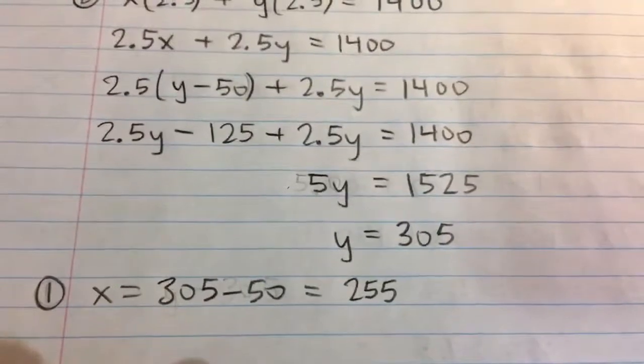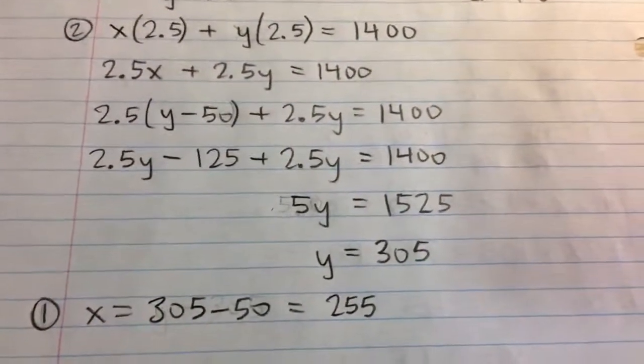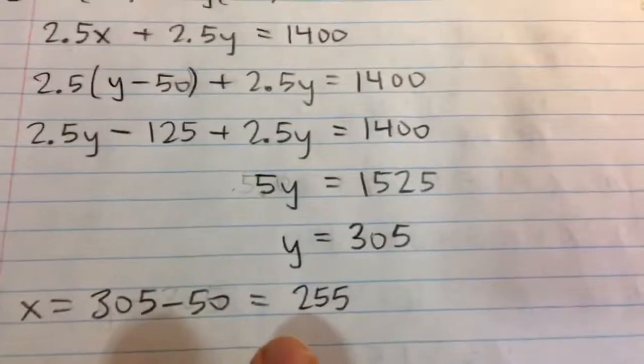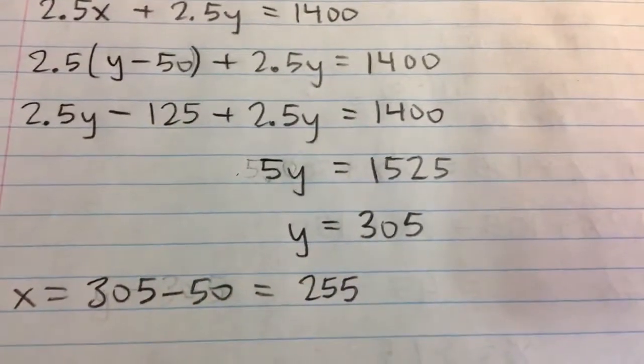which is 305 minus 50. So that's 255 miles per hour. And so these are your two answers.